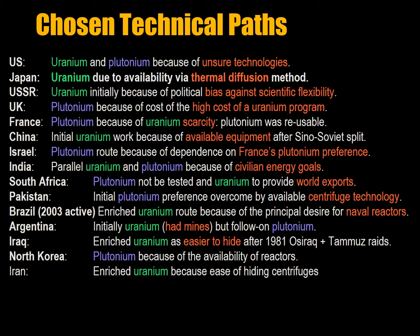India pursued a parallel uranium and plutonium program because of civilian energy needs. South Africa had to go the uranium route because they couldn't test the plutonium bomb, which was much more complex, and South Africa provided uranium for world exports. Initially Pakistan pursued a plutonium preference, but when centrifuge technology became available they went the uranium route. Brazil has gone the enriched uranium route because their initial focus was on naval reactors.